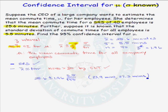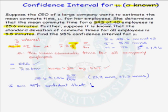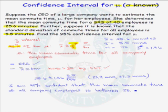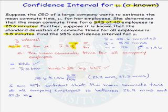The final step is to write the English statement: I am 95% confident that the mean commute time of all company employees is between 23.9 minutes and 27.3 minutes.